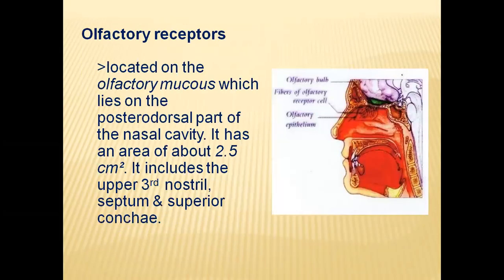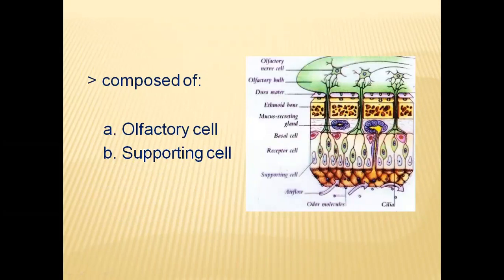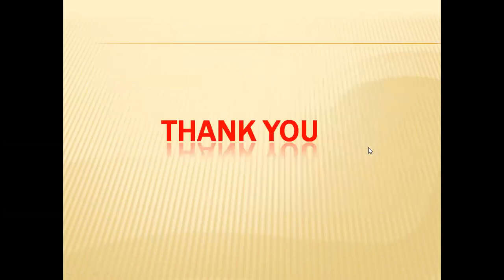Olfactory receptors are present in the olfactory mucosa of the nasal cavity, specifically the posterior dorsal part, with a total area of around 2.5 square centimeters. This region includes the upper third of the nasal cavity, septum, and superior concha region. There are two types of cells: olfactory cells and supporting cells. With this, today's topic is over; we will meet with a new topic in the next class. Thank you.